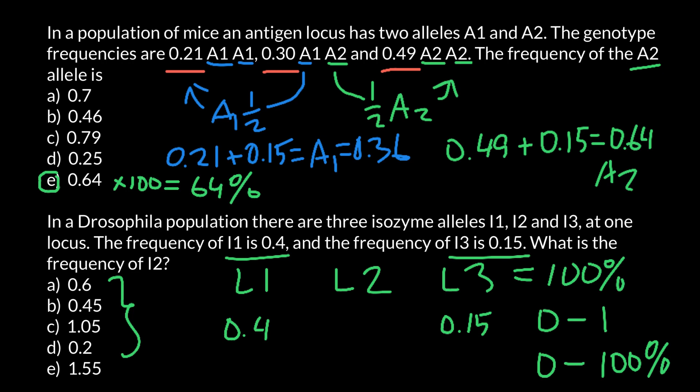Now in order to find the frequency of the L2 allele, as you see, we just have to add the frequency of L1 allele and L3 allele. Which is going to be 0.4 plus 0.15, which equals 0.55. And we have to subtract from 1. And we are going to get 0.45. And as you see, this is answer B.